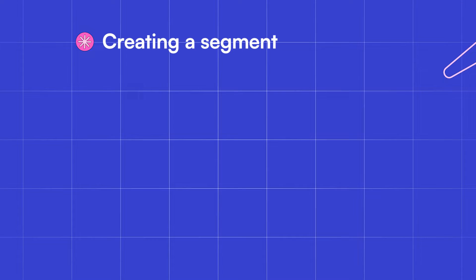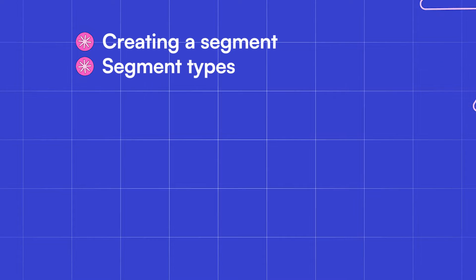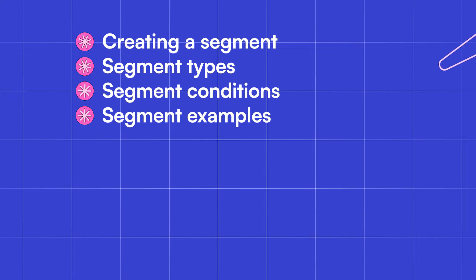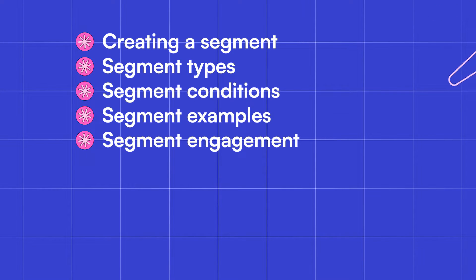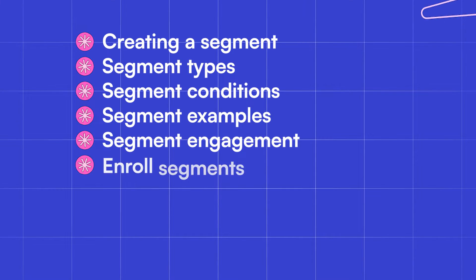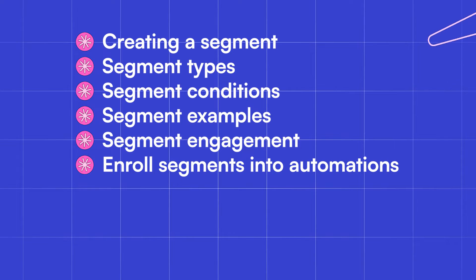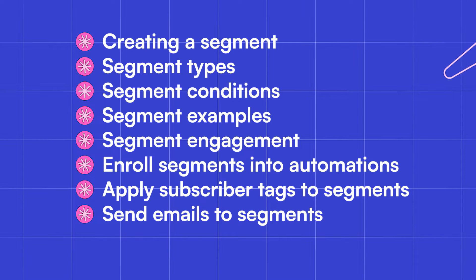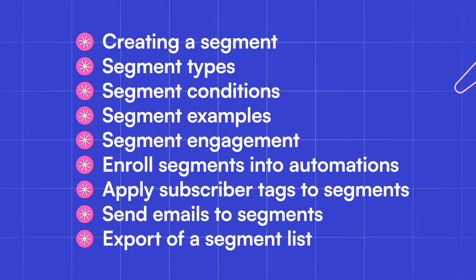We'll be covering how to create a segment, what the different segment types are, what segment conditions are, examples of what type of segments you can make, how to view the engagement of a specific segment, how to manually enroll a segment of subscribers into an automation, how to apply subscriber tags in bulk to a segment, how to send emails to specific segments separately from the rest of your list, and how to export a list of subscribers from a segment.